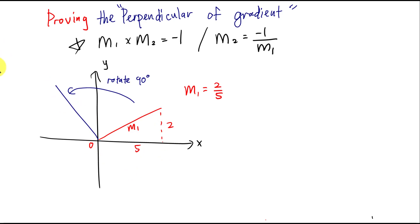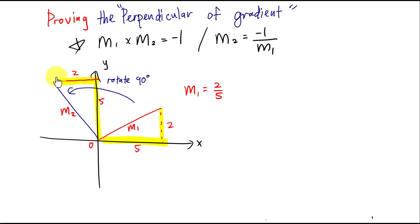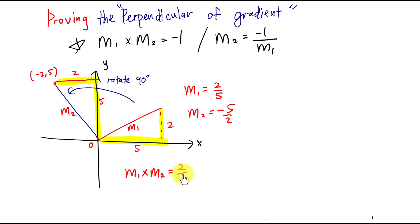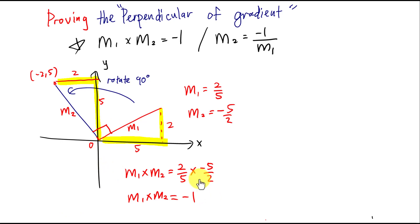After rotating, I get values of 5 and 2 for the new line. The coordinate of the new line's endpoint is negative 2, 5. Using that coordinate and the origin (0, 0), the second gradient is negative 5 over 2. To prove: m1 multiplied by m2 is (2/5) × (−5/2) = negative one. Because rotating 90 degrees means the angle between them is 90 degrees. That's method one.